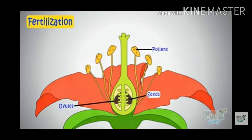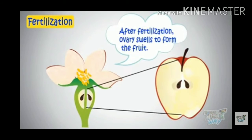During the fertilization process, when ovules fuse with pollens, seeds are formed. These seeds grow in soil and convert into a new plant. After fertilization, the ovary swells to form the fruit. Ovary converts into fruit and ovules convert into seeds, and these seeds again grow in soil and give rise to a new plant.